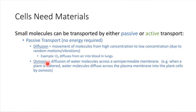Osmosis is a special name — it's a special type of diffusion. Osmosis specifically refers to the diffusion of water molecules. Water is super prevalent and super relevant to living things, so it's helpful to have a special word just to refer to the diffusion of water. Water molecules are capable of diffusing across the plasma membrane, so we would say that osmosis occurs across the plasma membrane. There are special little pores that allow water molecules to move across it.